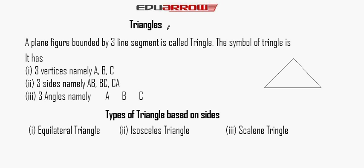Today we learn about triangles. A plane figure bounded by three line segments is called a triangle. The symbol of triangle is given here. A triangle has three vertices, namely A, B, and C. Where the two lines are joined is called the vertices.